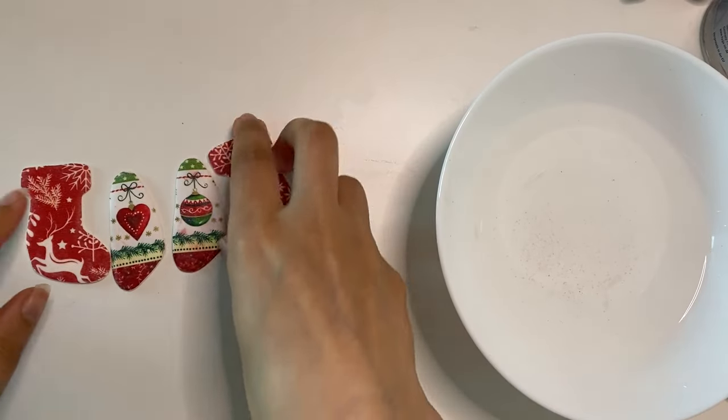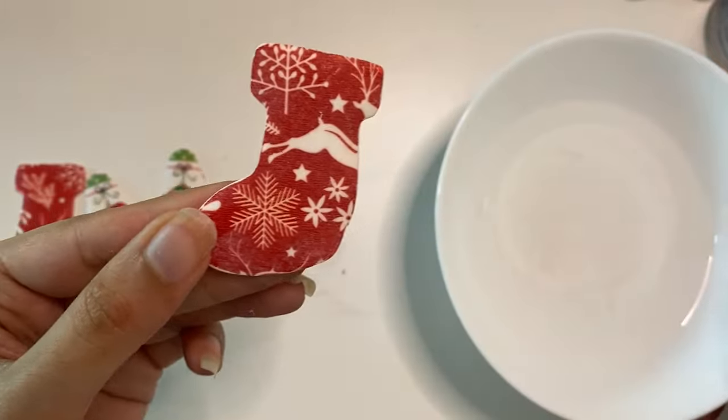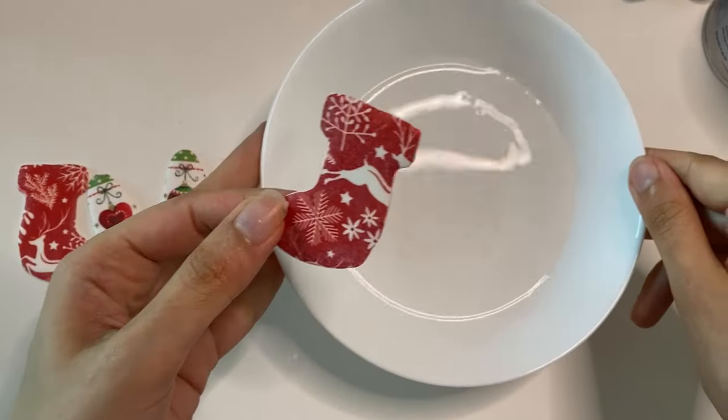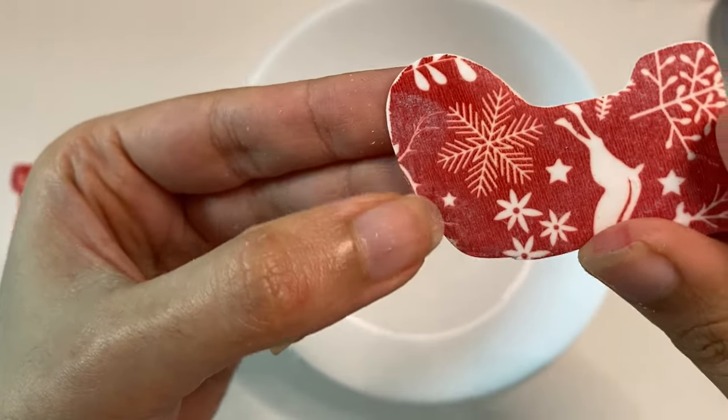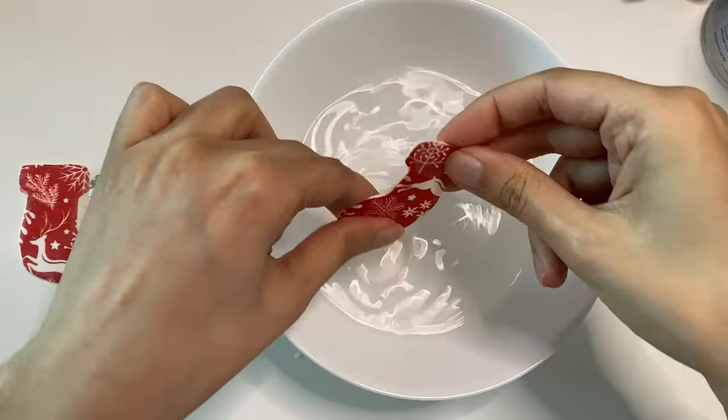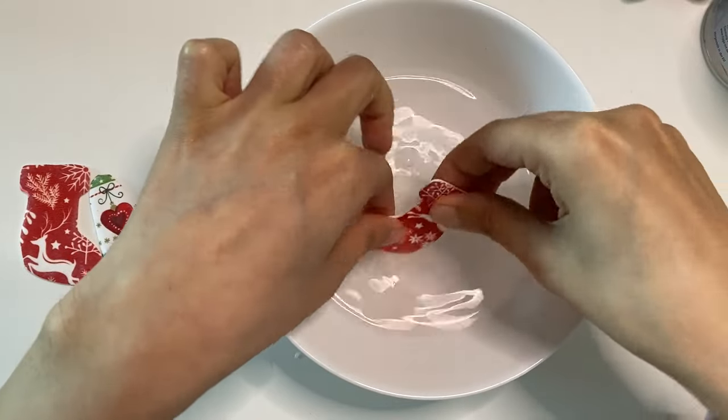After they dry, you can see some white residue on the earrings, but do not worry. This is just the paper and you can scrub them off using your finger or a brush. Don't worry, your print won't come off if you scrub the earrings.